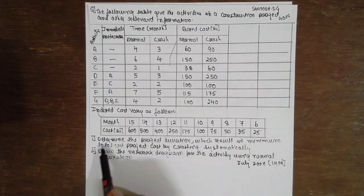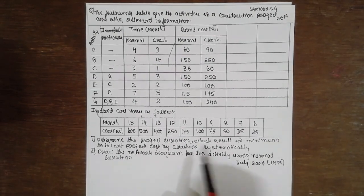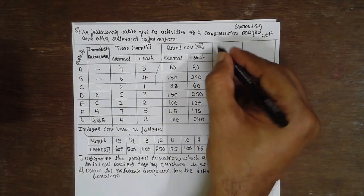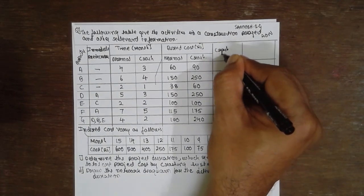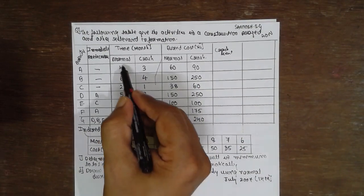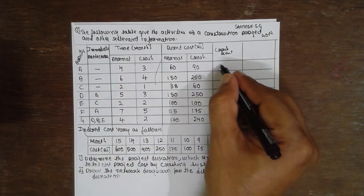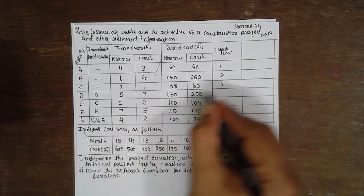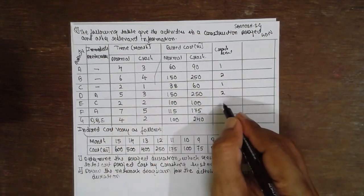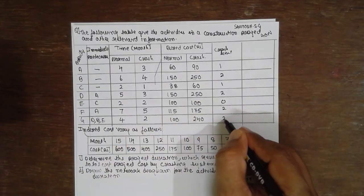Indirect cost is given in a separate table. We have to determine the optimum duration and the cost. First, we are going to find out the crash limit. The crash limit is normal time minus crash time: 4 minus 3 is 1; 6 minus 4 is 2; 2 minus 1 is 1; 5 minus 3 is 2; 2; 0; 5 minus 7 is 2; 4 minus 2 is 2.